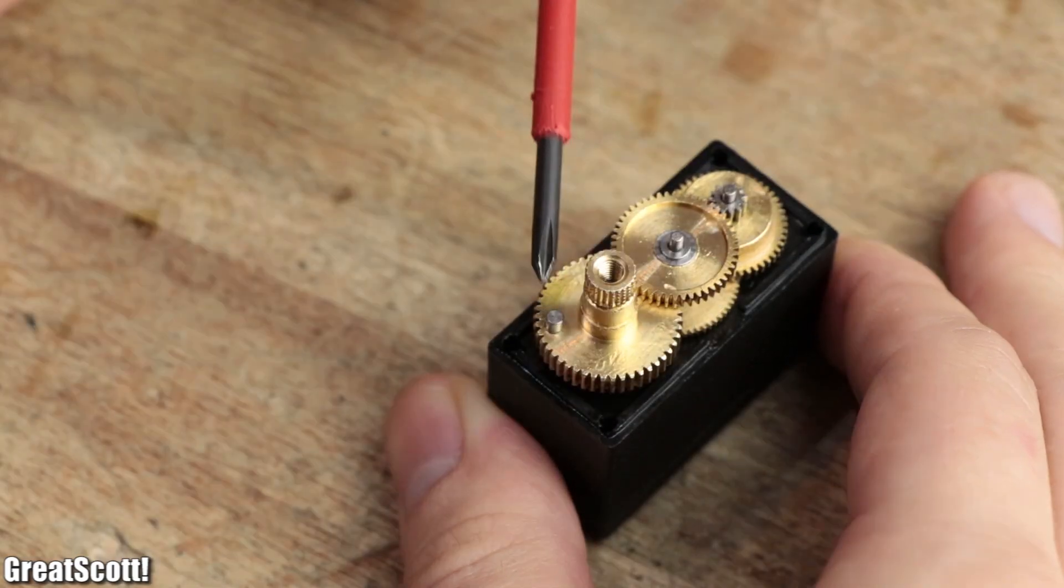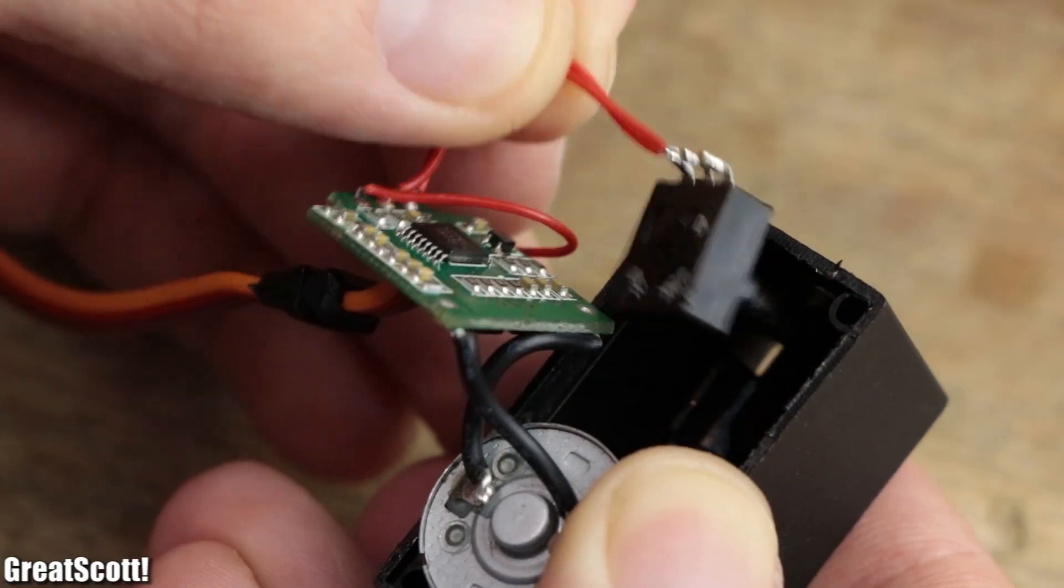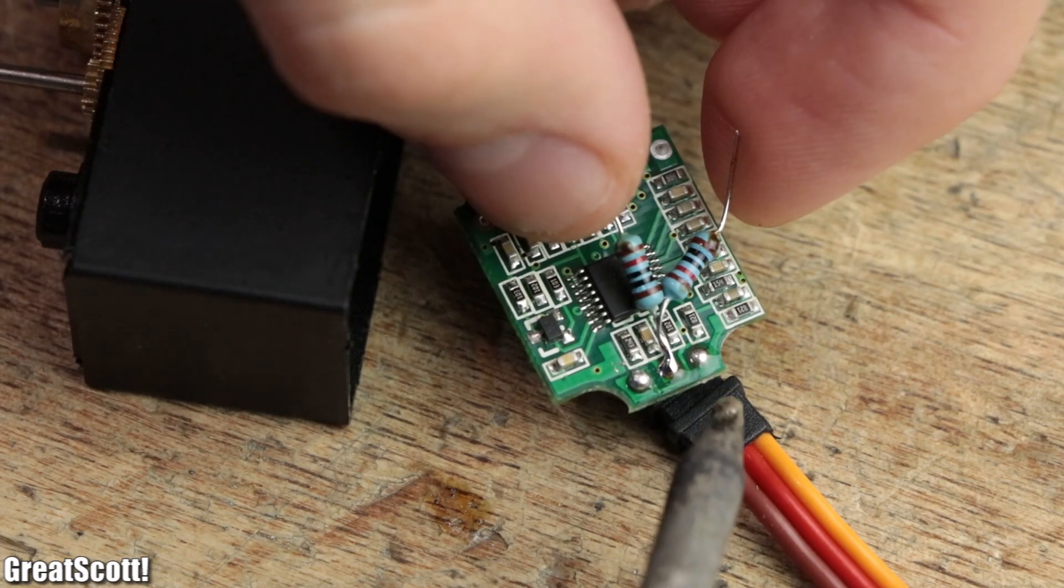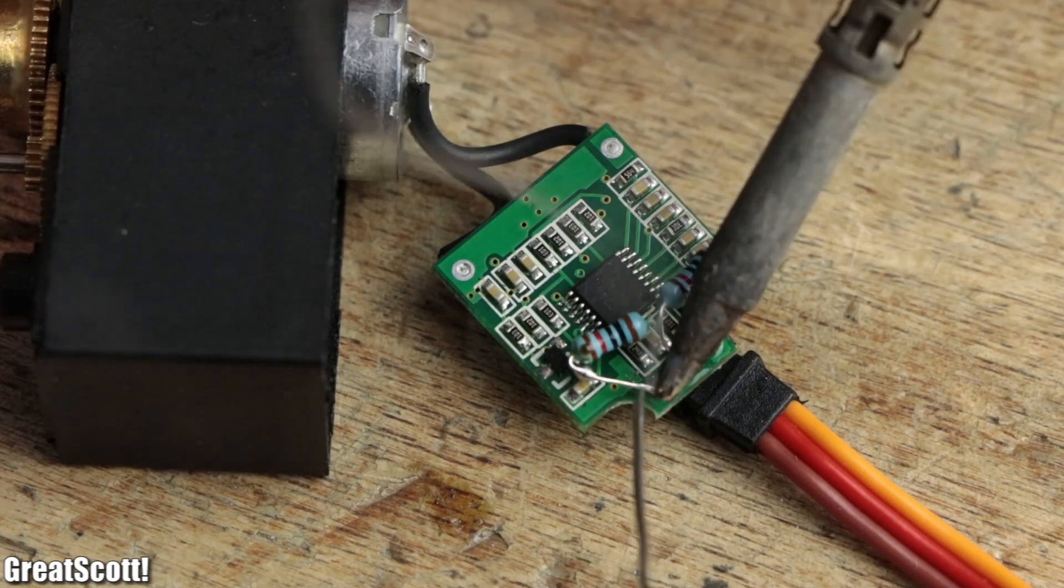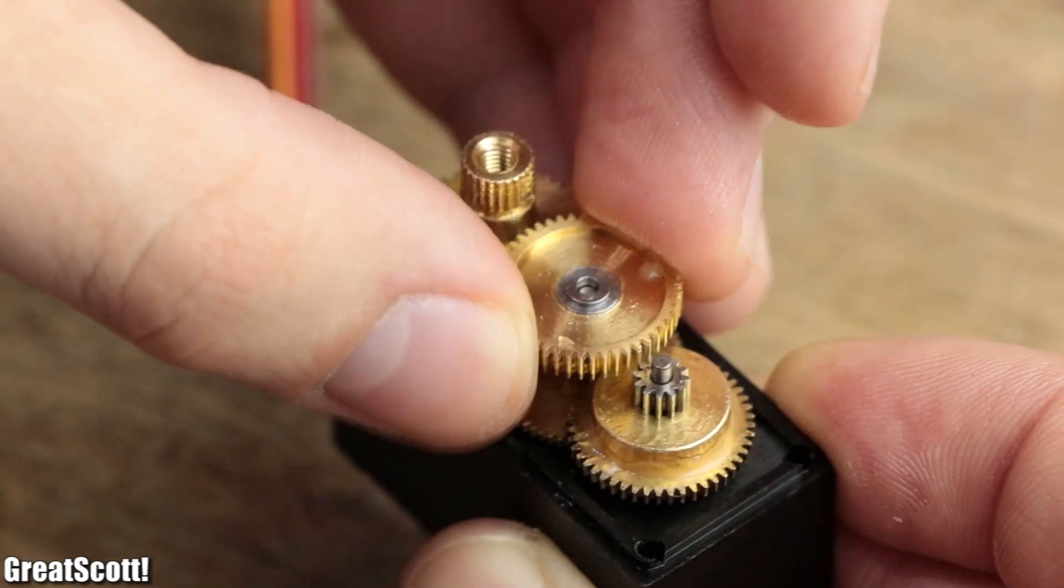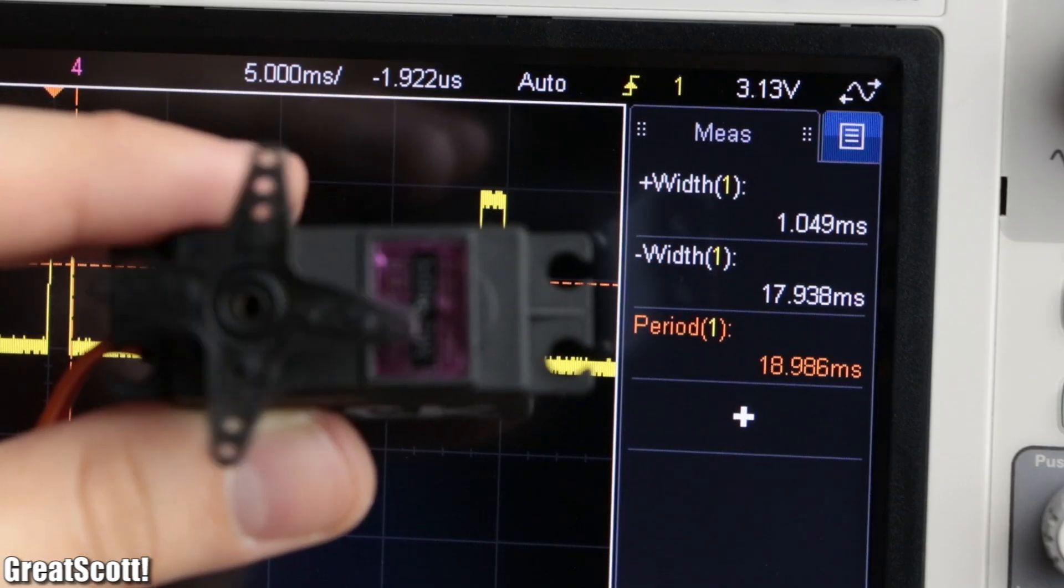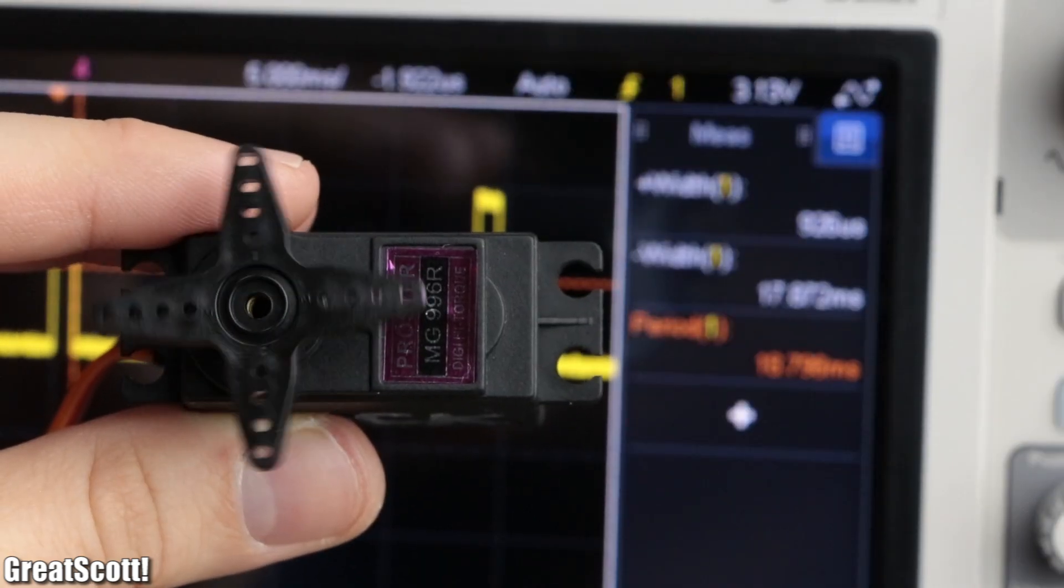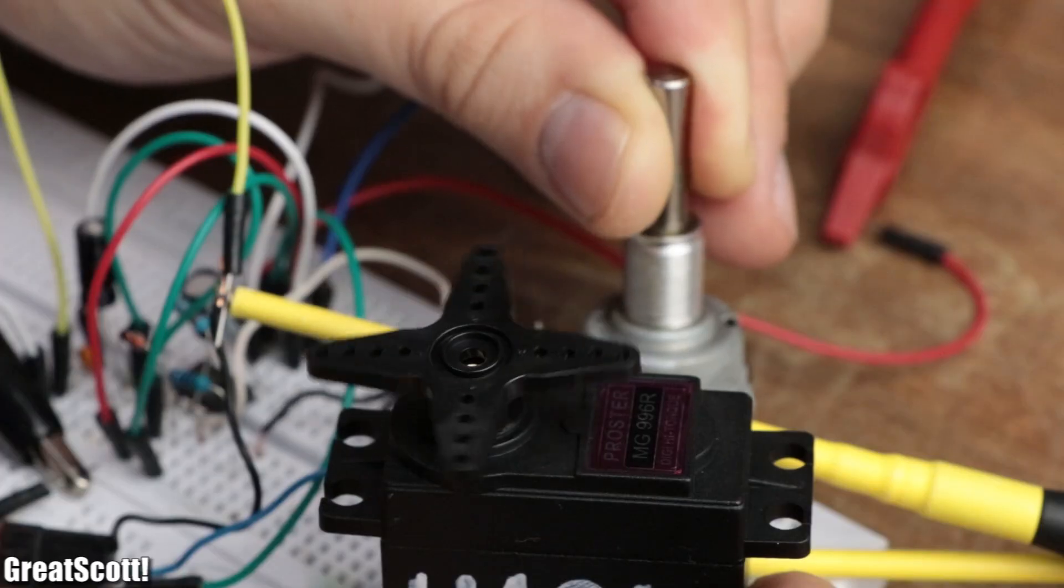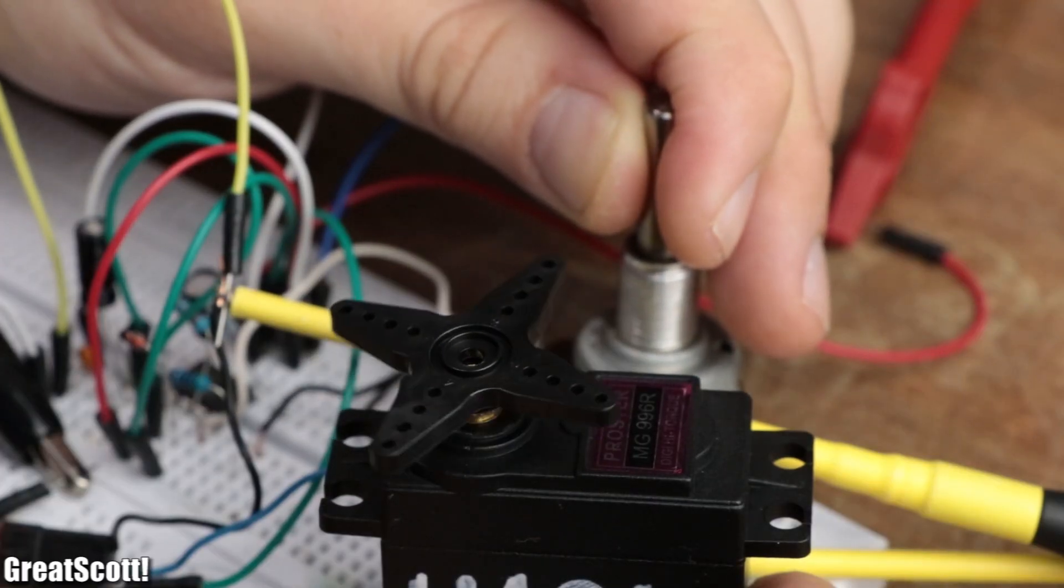Simply remove the mechanical end stop, which is usually attached to one gear, remove the feedback potentiometer, and replace it with two 10 kilo ohm resistors to create a voltage divider that tells the controller IC that the motor is always in its 0 degree position. Now by applying an on time below 1.4ms, the motor rotates clockwise, and above 1.4ms anti-clockwise, in both cases with an adjustable RPM.